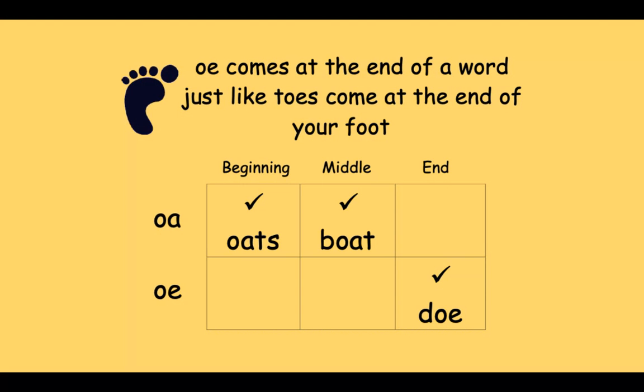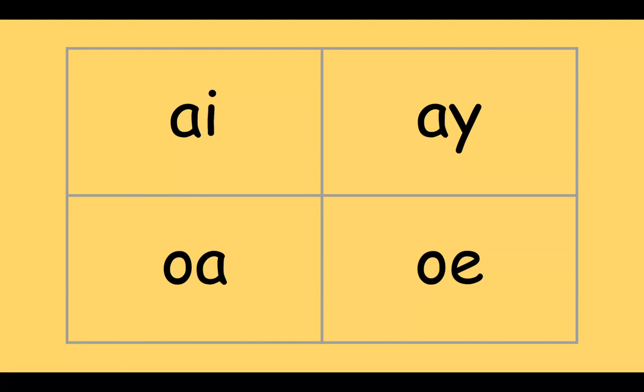All right, let's play a game. I'm going to give you a word and I want you to point to the correct spelling. Please put your finger on your screen—actually touch either AI, AY, OA, or OE. Try to touch it before I give you the answer.